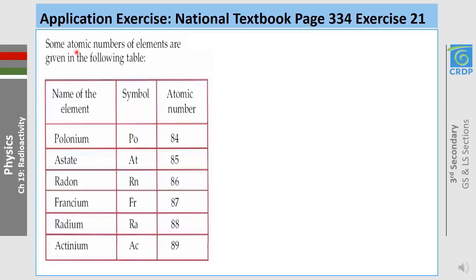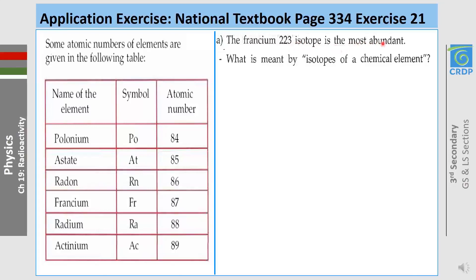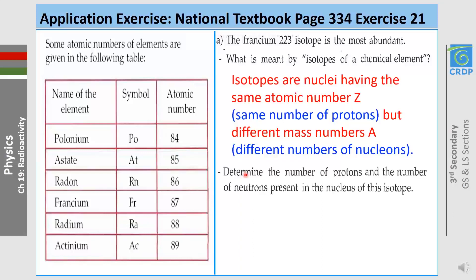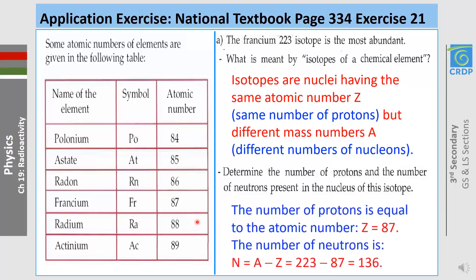Proceeding to another exercise from the book. A table gives atomic numbers of elements including polonium (84), astatine (85), and others. First question: what is meant by isotope? Isotopes are nuclei having the same atomic number Z (same number of protons) but different mass number A (different number of nucleons). For the francium-223 isotope: the number of protons is 87 (the atomic number), and the number of neutrons is A − Z = 223 − 87 = 136 neutrons.